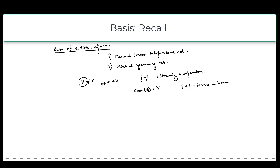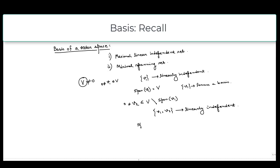If not, then we will take another nonzero vector V2 from V minus span of V1. If V is not equal to span of V1, then there exists some other vector V2, and we add it to our set. As V2 is not in span of V1, the set {V1, V2} is linearly independent. Then we check whether span of {V1, V2} equals V or not; if it is, then this is our basis.